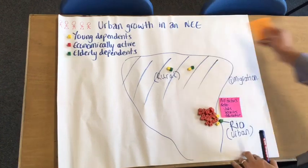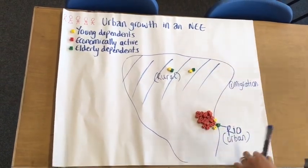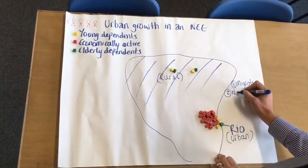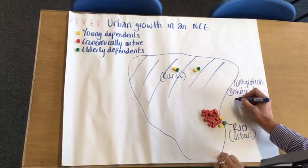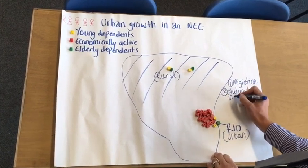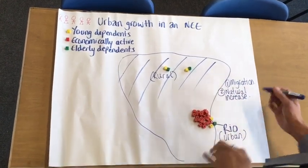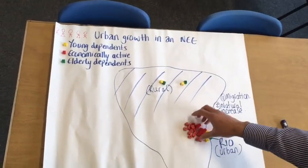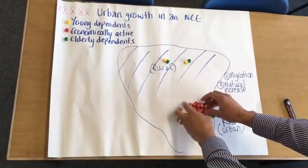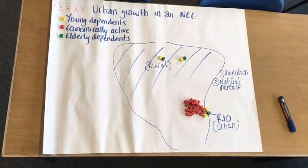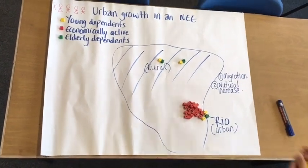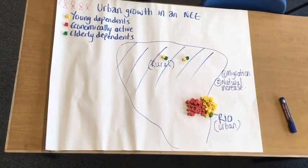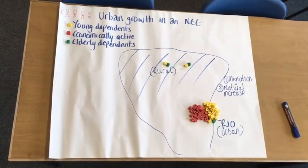The second reason for the increase is what we call natural increase, and natural increase happens for two reasons. The first reason is that economically active people meet and decide to have children — often lots of children. So here we have an increase in the number of young dependents.